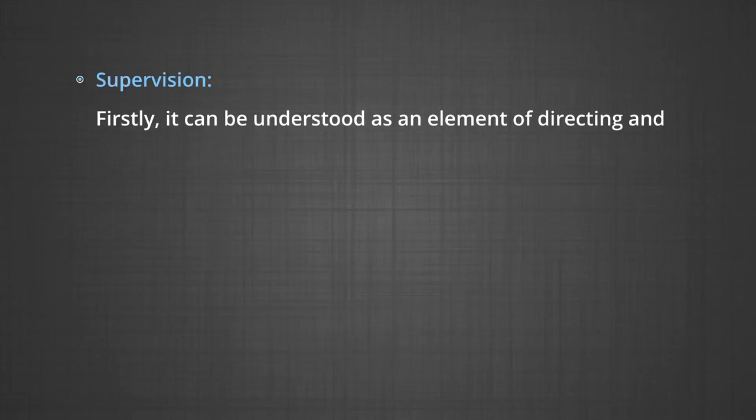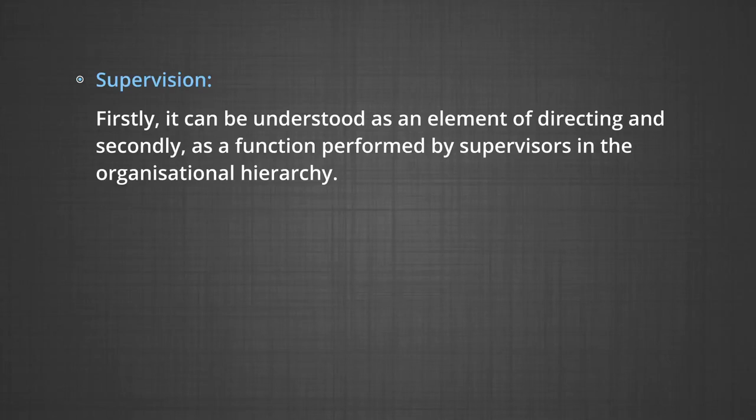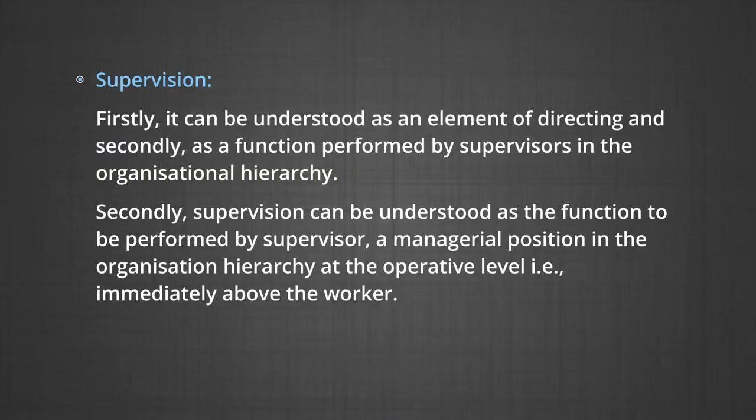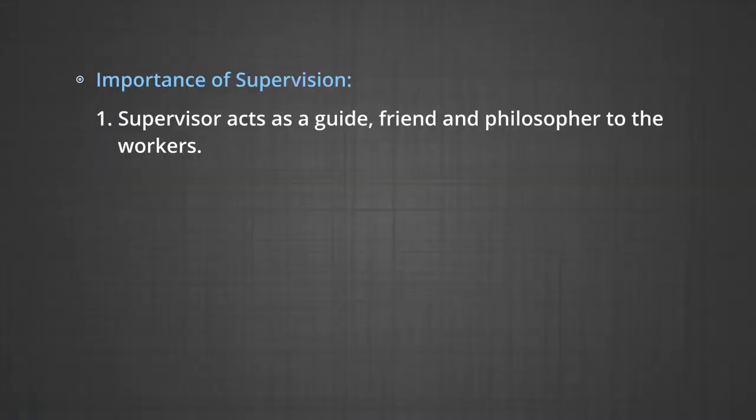The first element of directing is supervision. The term supervision can be understood in two ways: firstly, it can be understood as an element of directing; and secondly, as a function performed by supervisors in the organizational hierarchy. Supervision being an element of directing, every manager in the organization supervises his or her subordinates. Secondly, supervision can be understood as a function to be performed by a supervisor — a managerial position in the organization hierarchy at the operative level, that is immediately above the workers. The supervisor makes sure that all the instructions are communicated to each and every employee.